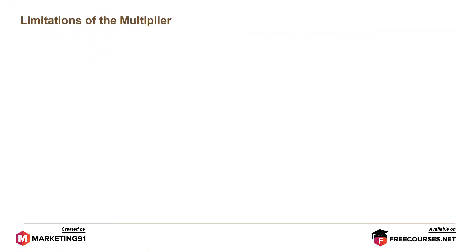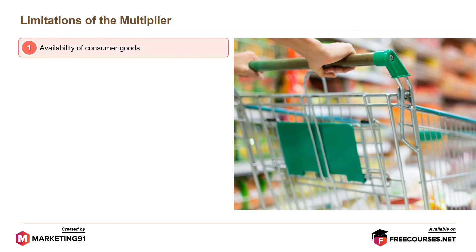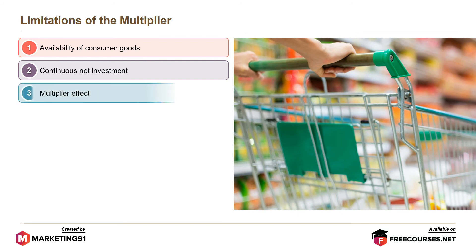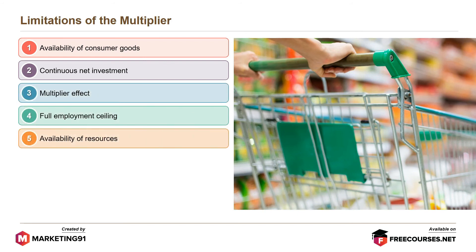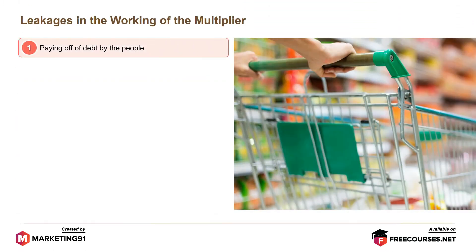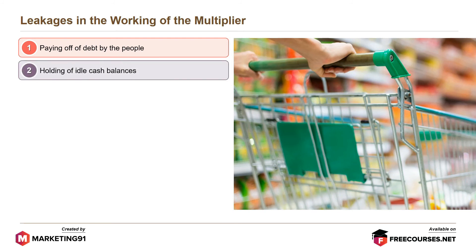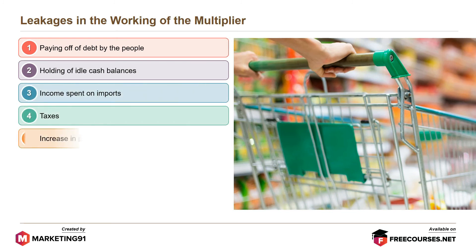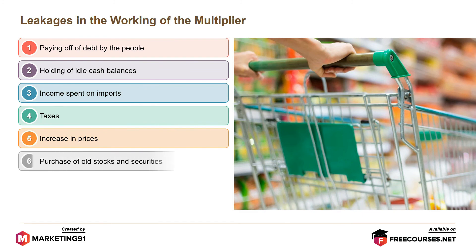Limitations of the multiplier are: availability of consumer goods, continuous net investment, multiplier effect, full employment ceiling, and availability of resources. Leakages in the working of the multiplier are: paying off of debt by the people, holding of idle cash balances, income spent on imports, taxes, increase in prices, and purchase of old stocks and securities.